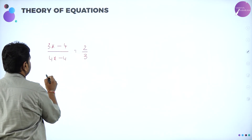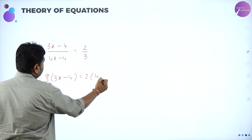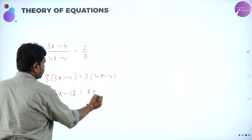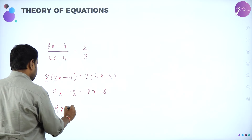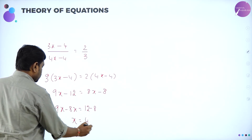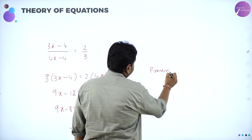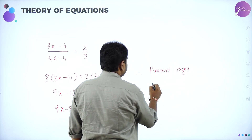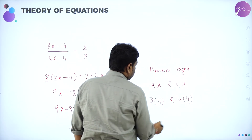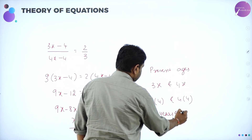Cross multiplying and simplifying: 3 into (3x minus 4) equals 2 into (4x minus 4), which gives 9x minus 12 equals 8x minus 8. Rearranging: 9x minus 8x equals 12 minus 8, so x equals 4. Therefore, the present ages are 3x and 4x, that is 3 into 4 and 4 into 4, which gives 12 years and 16 years.